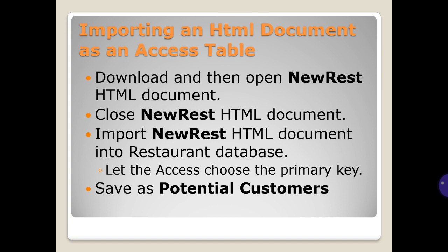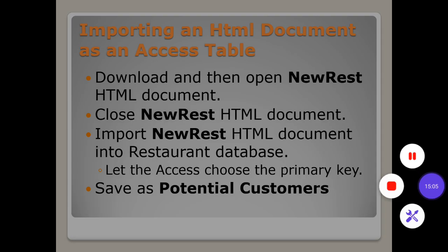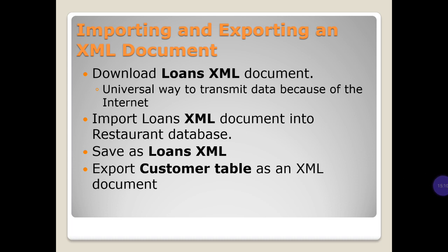Importing an HTML document as an Access table: download and open the new restaurant HTML document, close it, then import the new restaurant HTML document into the restaurant database. Let Access choose the primary key and save as 'potential customers'. For import and export of an XML document: download the Loans XML document — XML is a universal way to transmit data because of the internet. Import the Loans XML document into the restaurant database and save as 'Loans XML', then export the customer table as an XML document.